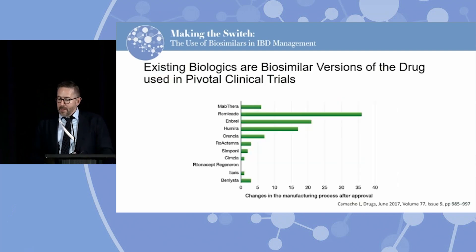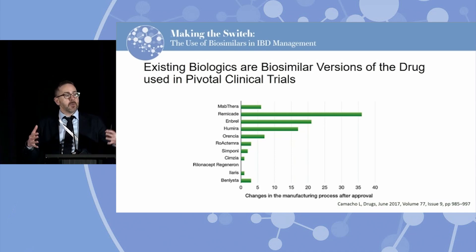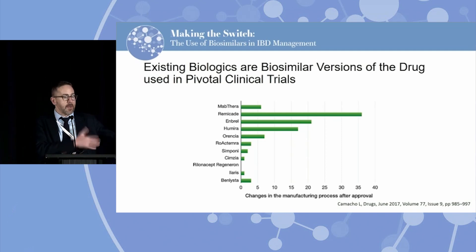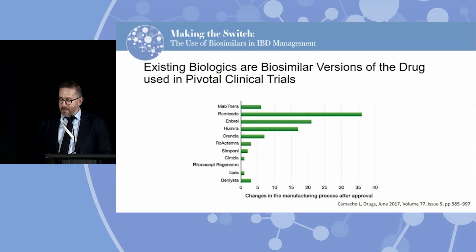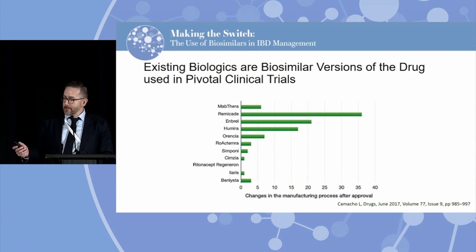Remicade has had over 30 manufacturing changes since it was originally produced, and each of these could in theory produce a biosimilar version of the original Remicade from 1997. So that's worth keeping in mind when we think about how different these are — many of the drugs we're using are actually different to the versions that were approved originally or that we were using 10 years ago.